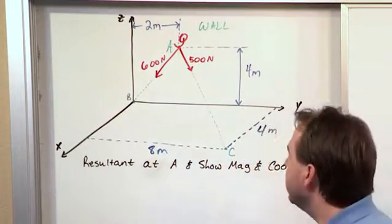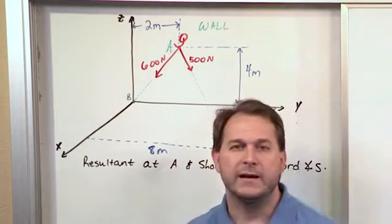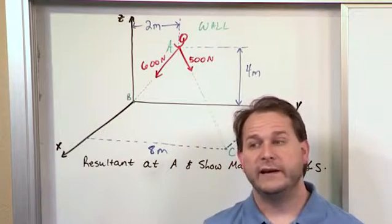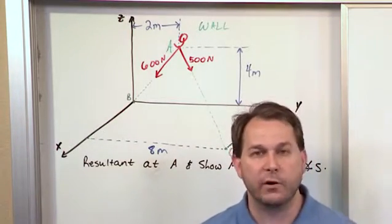And what we're trying to do is we want to figure out what the resultant force is acting on this hook. So we want to figure out what is the total force acting, which will be the vector sum of the two forces that you see drawn.